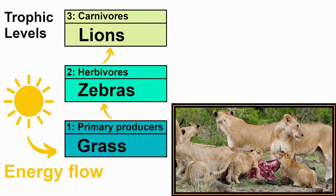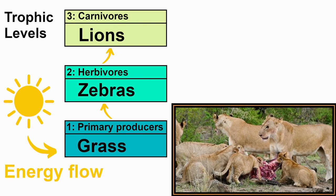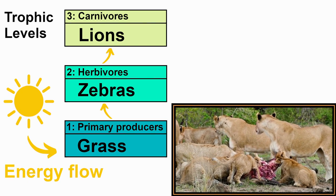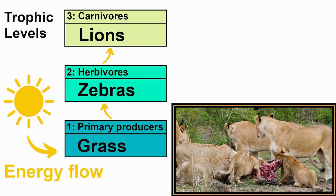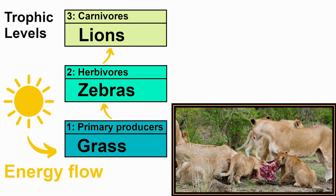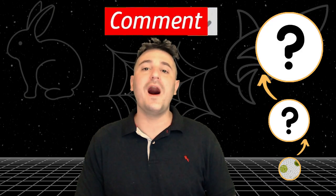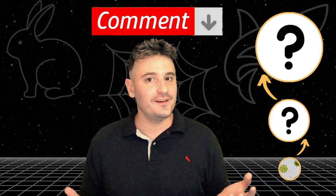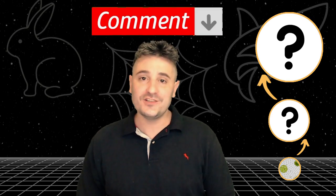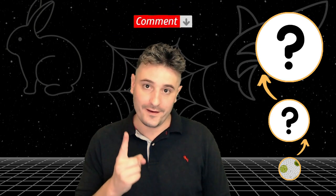The second trophic level consists of herbivores that eat the grass — let's use zebras. The third trophic level could be some type of carnivore — let's use the lion, an apex predator which eats the zebra. Can you think of an aquatic food chain? It could start with algae or phytoplankton as trophic level 1.